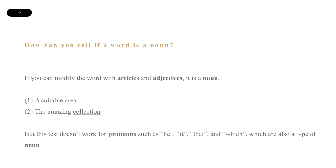So, a suitable area and the amazing collection — area is a noun and collection is a noun because we can put an article and an adjective in front of those words. But this test doesn't work for pronouns such as he, it, that, and which, which are also a type of noun.